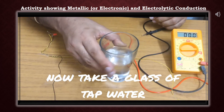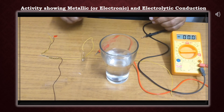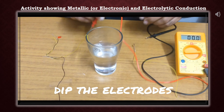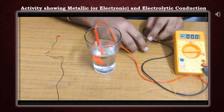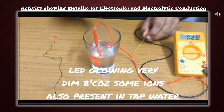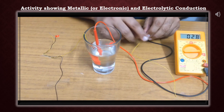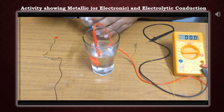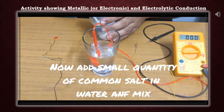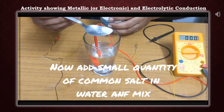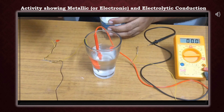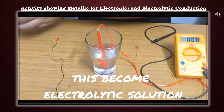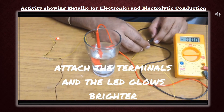Now take a glass of tap water. We know tap water contains a small quantity of ions. When we attach the terminals, a small current flows through the circuit — observe the dim light of the LED and the reading on the multimeter. Now add a small quantity of common salt, that is sodium chloride, in water and mix it well. The aqueous solution of sodium chloride acts as an electrolyte, which dissociates in water to give sodium and chloride ions.